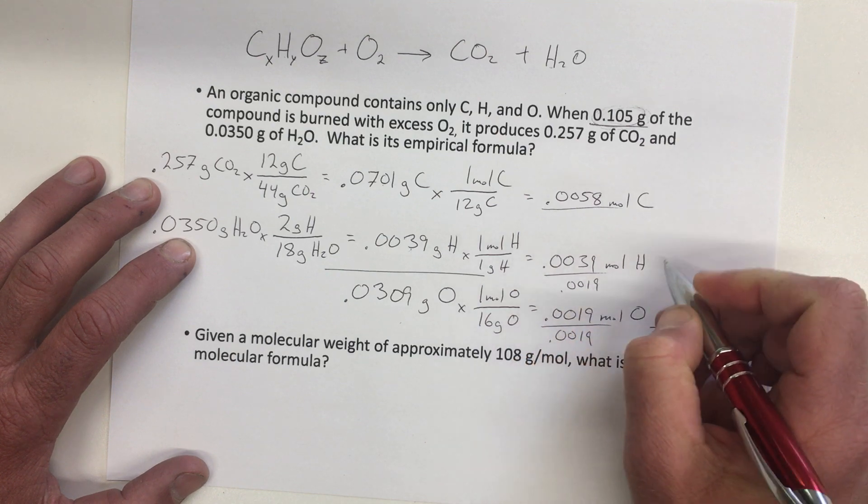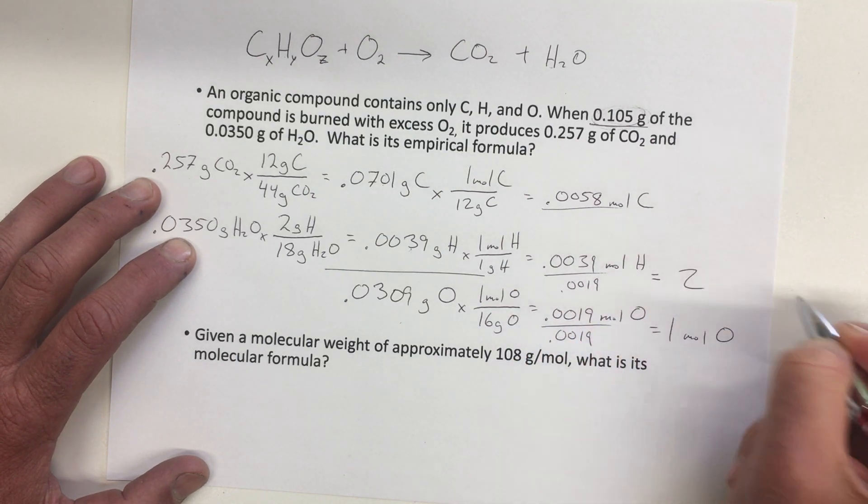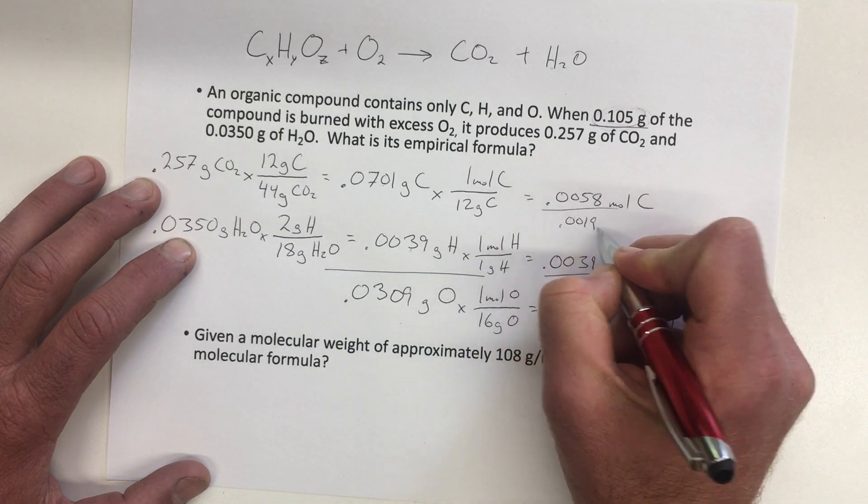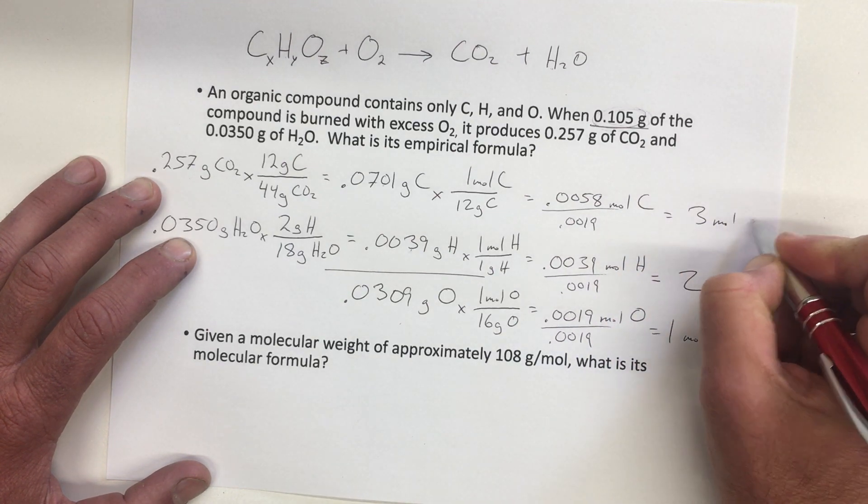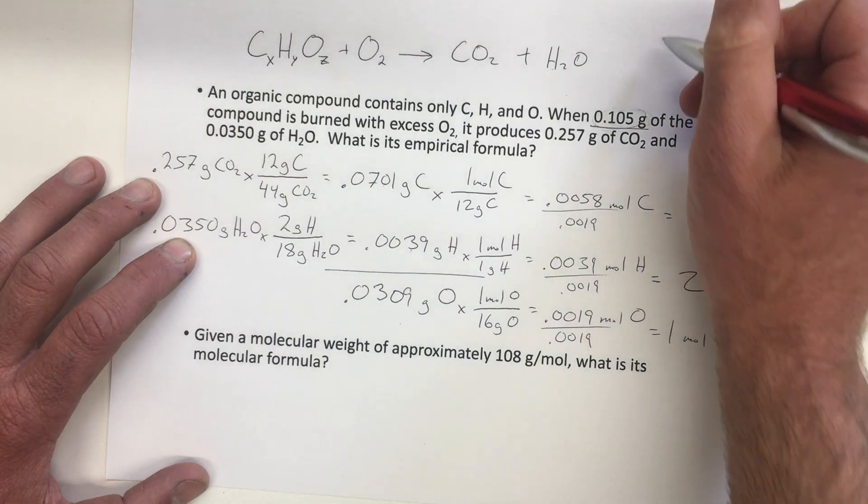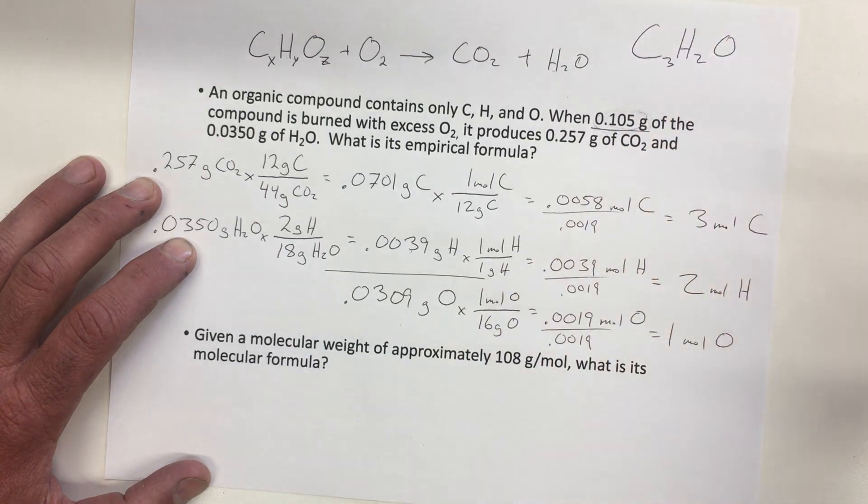0.0019, that gives us about 2 for the hydrogen. And divided by 0.0019, that gives us about 3 moles of carbon. So our ratio here, our formula for our hydrocarbon, is C3H2O.